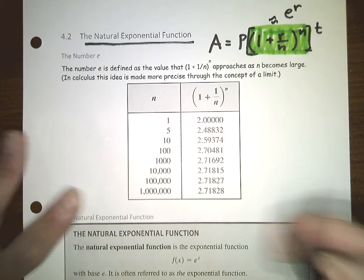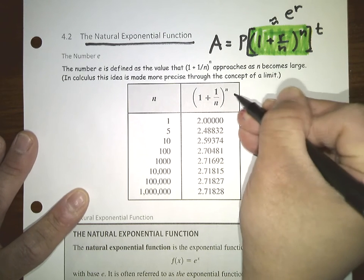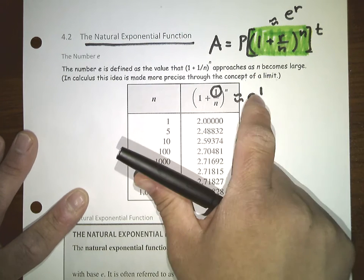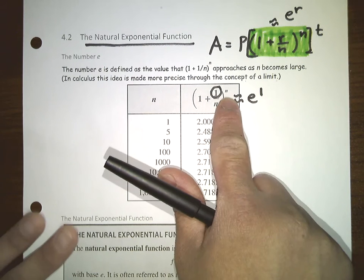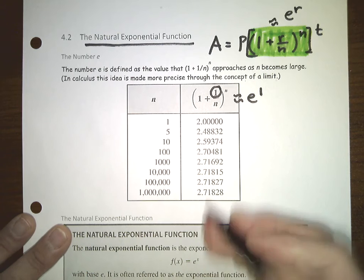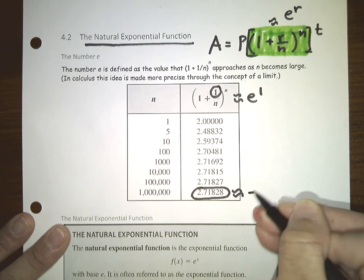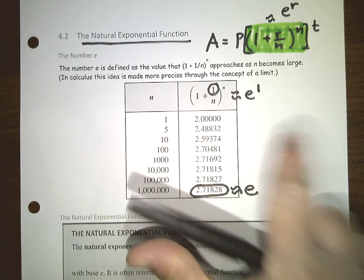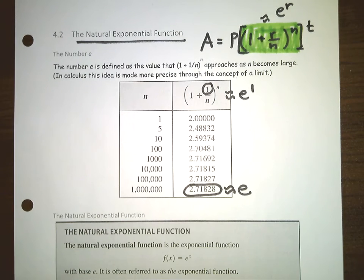If you want e to the first power, you put r equal to 1. When you put in a really large value for n, you get approximately e, or e to the first power. If you put a 2 there, you get e squared; a 3 gives e cubed, and so on.